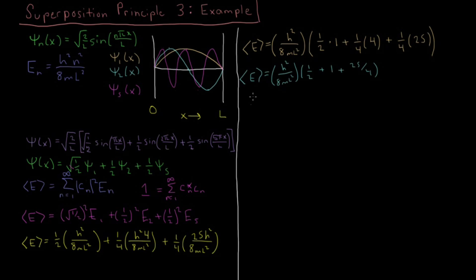Multiplying 31 over 4 by the 1 over 8, our final result is that the expectation value of the energy is 31h² over 32ml². That's our final answer. But that's just the expectation value — that's the average.